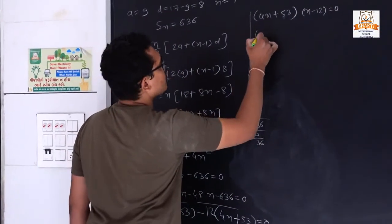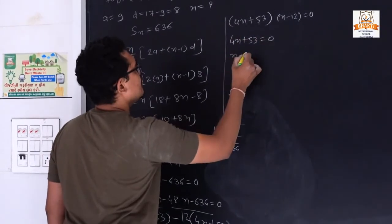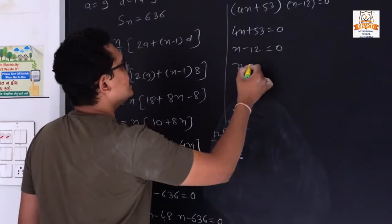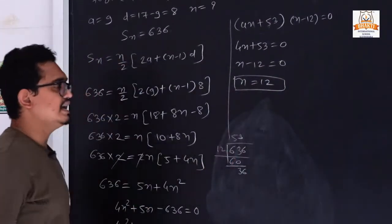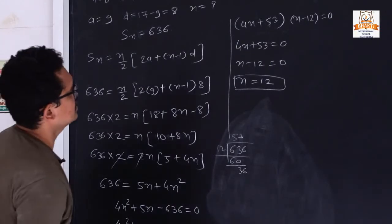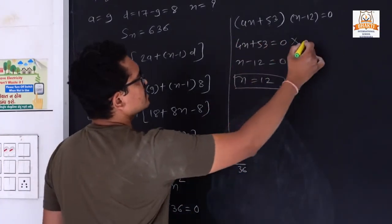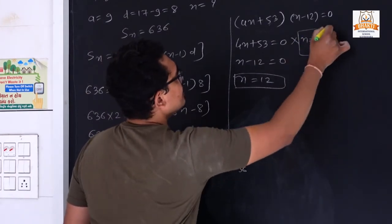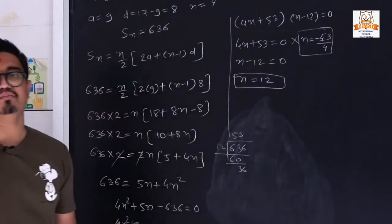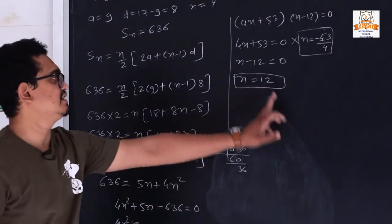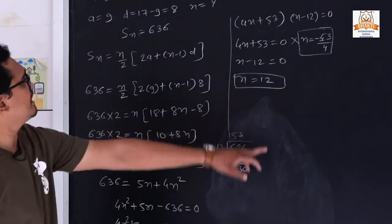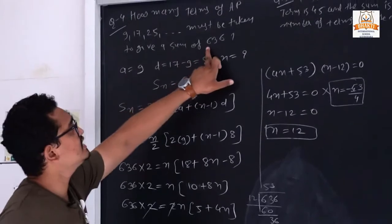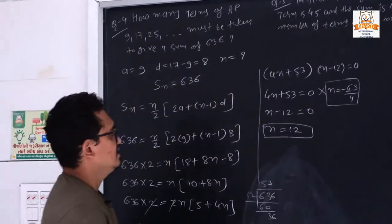So the two brackets are (4n + 53)(n − 12) = 0, giving 4n + 53 = 0 or n − 12 = 0. From the first: n = −53/4, which is not valid because the number of terms must always be a positive integer. Therefore n = 12. With 12 terms in this series, the sum is 636.